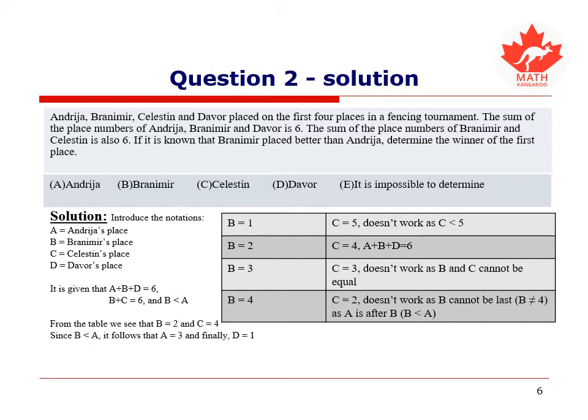It then follows that b equals two, and that c equals four. Next, since b is less than a, it follows that a is equal to three, and that d is equal to one. Therefore, our answer to this question is d.